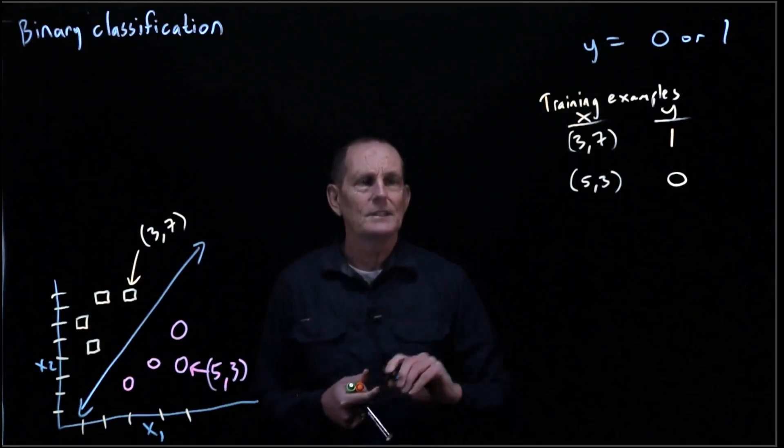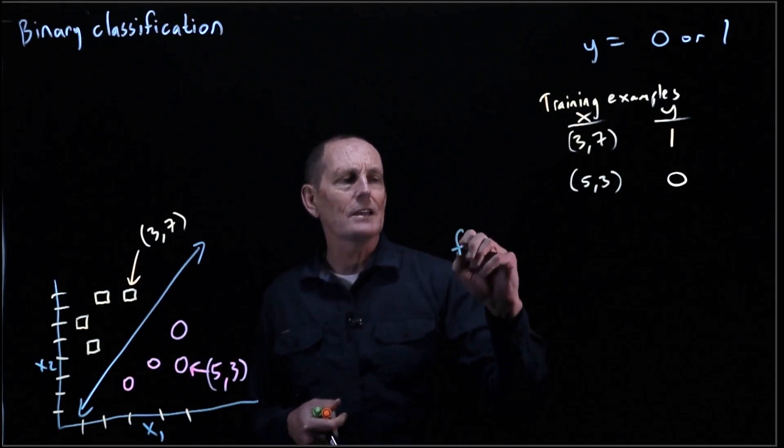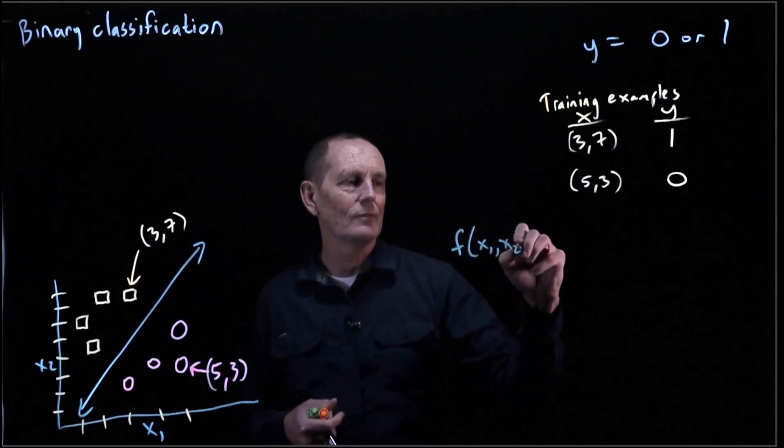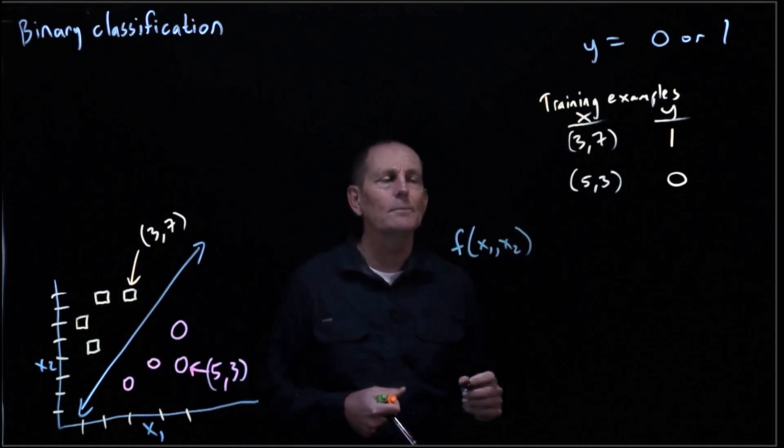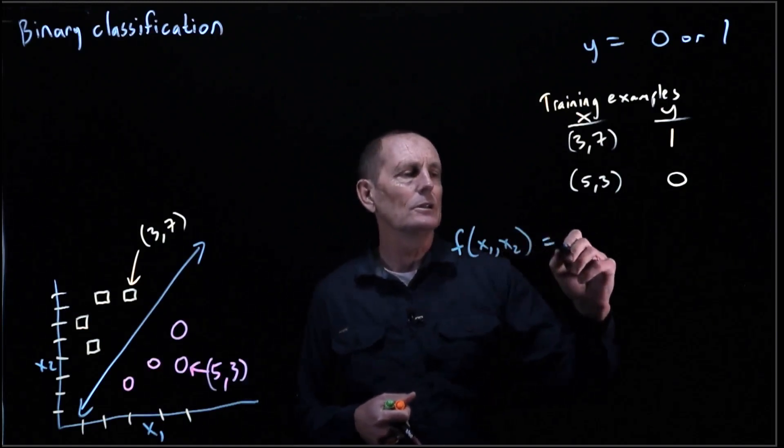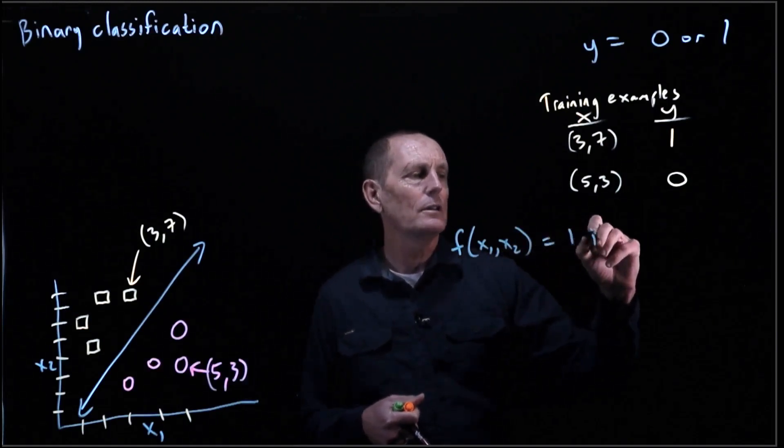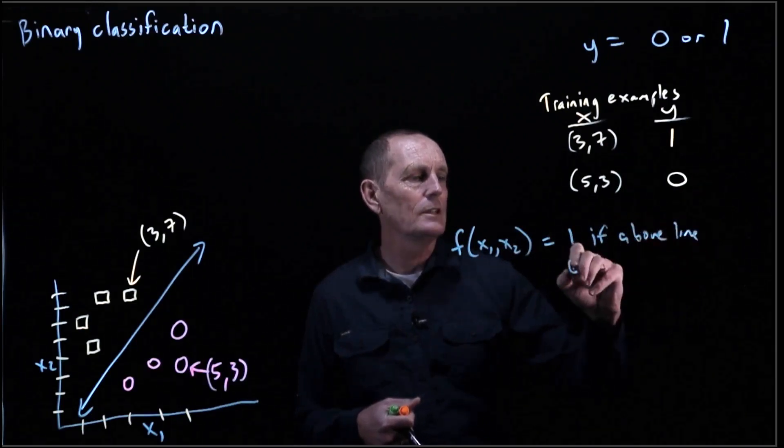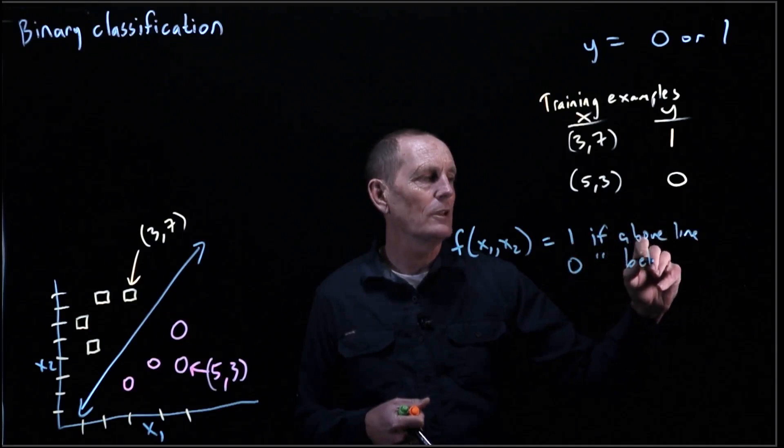So what we could say is something like this. We could say f of x, where x is really x1 comma x2, could be equal 1 if above the line and 0 if below the line.